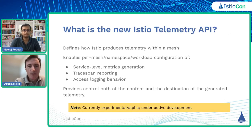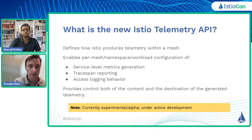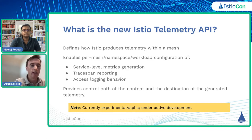So what is the newest telemetry API? In the most obvious sentence ever, it is a new API for controlling how Istio produces telemetry within a mesh. Specifically, we're talking about controlling telemetry generation at three different levels. One of the main goals was to allow not just mesh-wide configuration of telemetry behavior, but also namespace-scoped behavior, as well as behavior scoped to groups of workloads or individual workloads themselves.